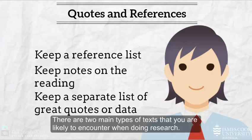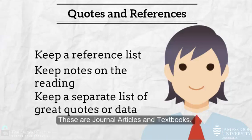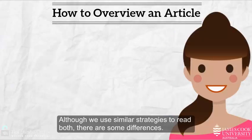There are two main types of texts that you are likely to encounter when doing research. These are journal articles and textbooks. Although we use similar strategies to read both, there are some differences.